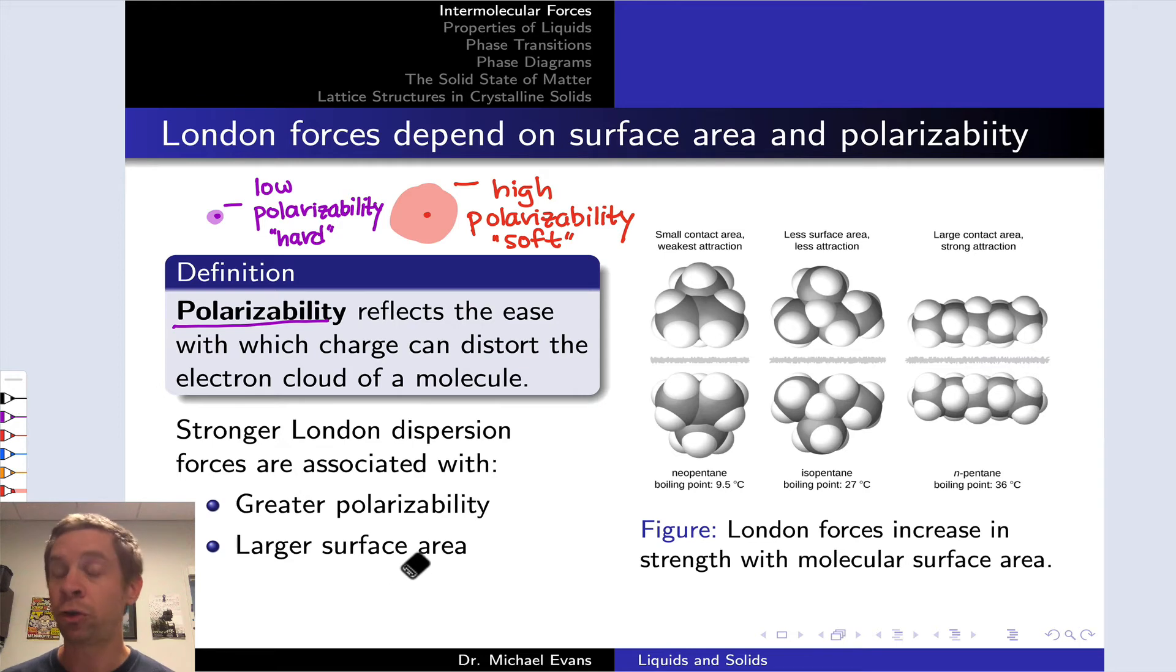For a related reason, molecular surface area also affects the strength of London forces. With greater surface area associated with molecules that are longer and skinnier, more cylindrical as opposed to more spherical, the longer and skinnier molecules with larger surface area tend to have stronger London forces. This can explain some pretty dramatic differences in boiling points. For example, these three molecules here all have the same molecular formula. They are isomers. However, the boiling points are vastly different, with n-pentane, a liquid at room temperature, boiling at 36 degrees C, whereas neopentane boils at only 9.5 degrees C and is a gas at room temperature.